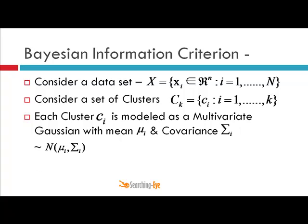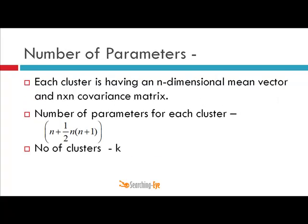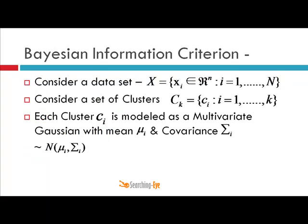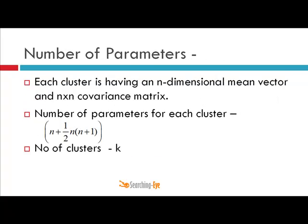This is a distribution representing where the data is coming from. The number of parameters each cluster has is an n-dimensional mean vector mui and a covariance matrix n×n sigma i. So the number of parameters for each cluster is n plus (1/2)·n·(n+1), and there are K such clusters at level K.